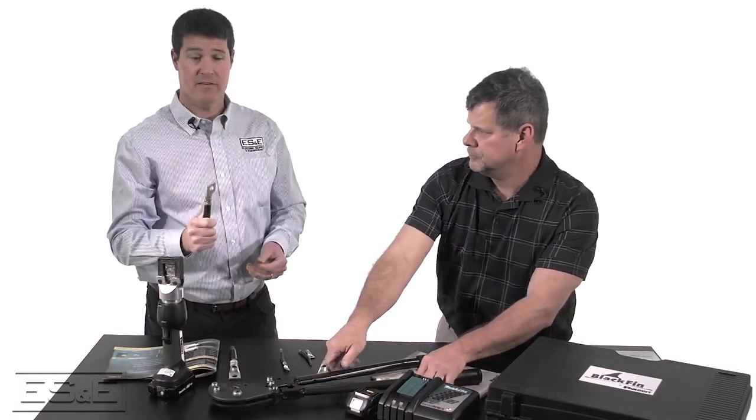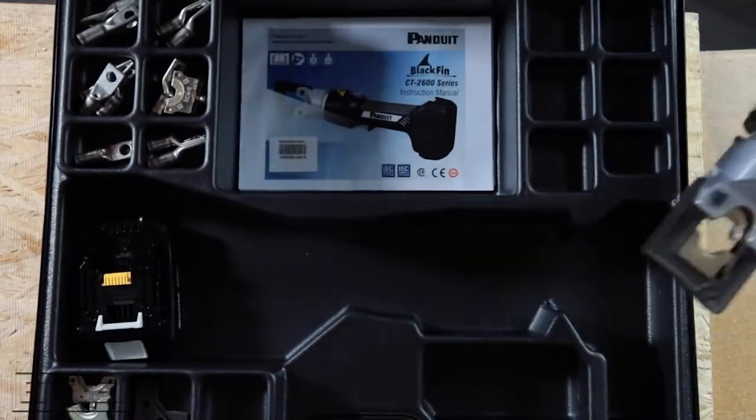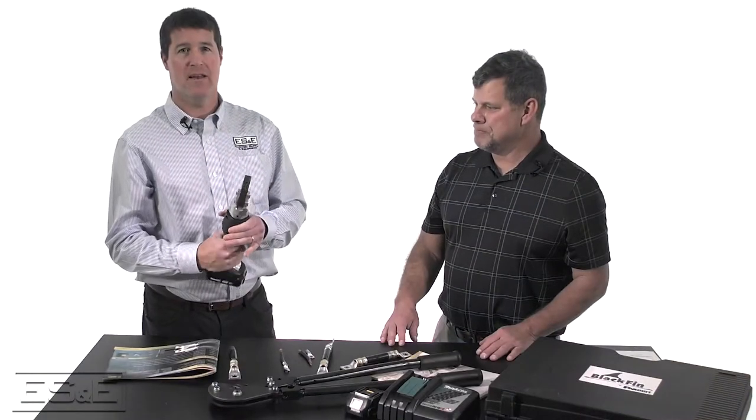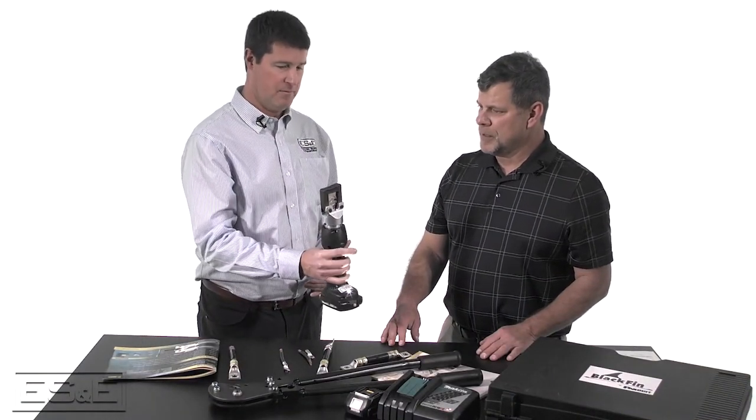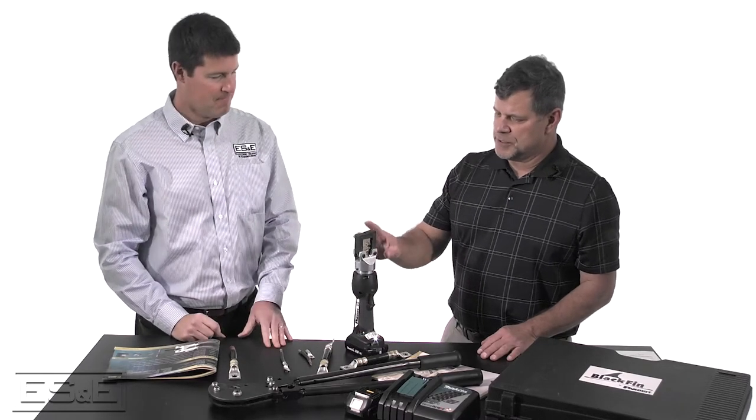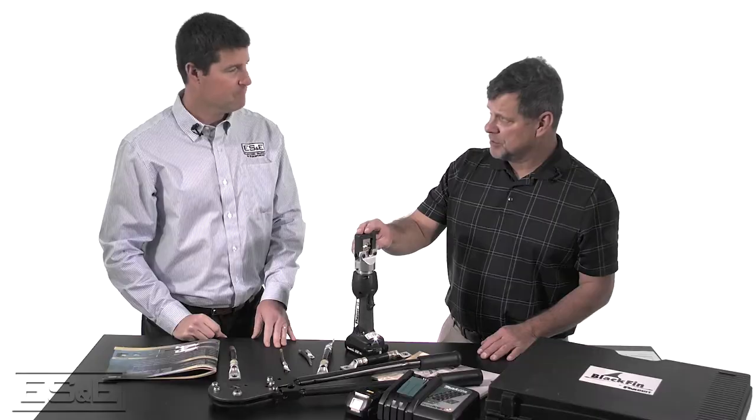So that's the CT-720. Now let's move on to some more exciting power tools. Kent, tell us how this tool crimp and how many crimps could we expect out of one charge on this tool. The CT-2600 is a battery operated hydraulic four ton crimping tool.